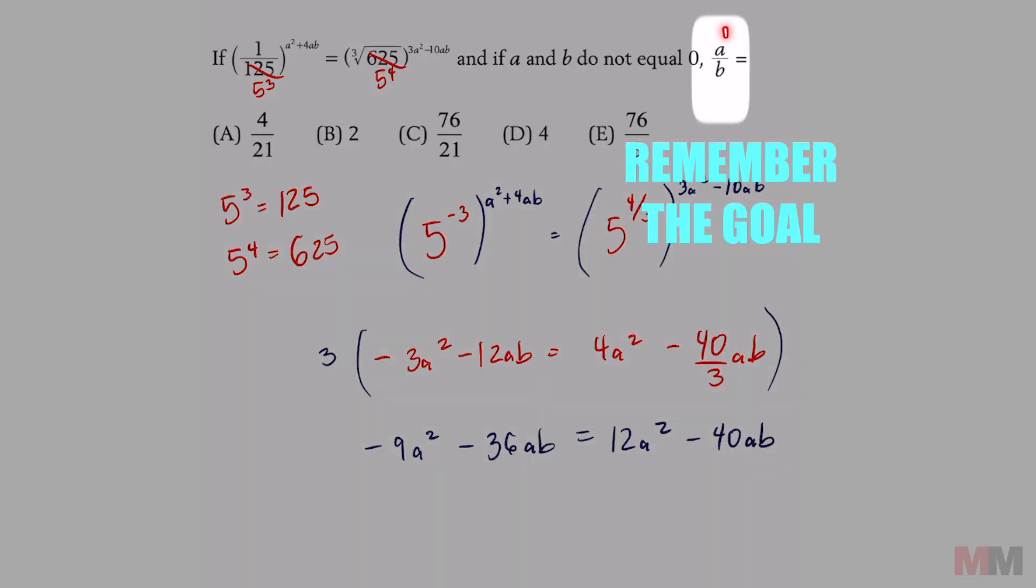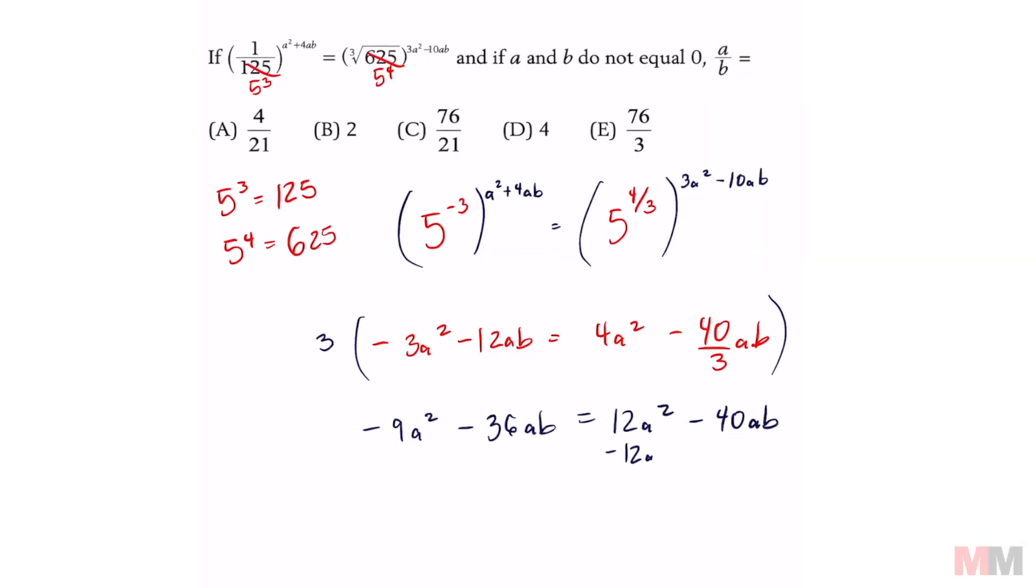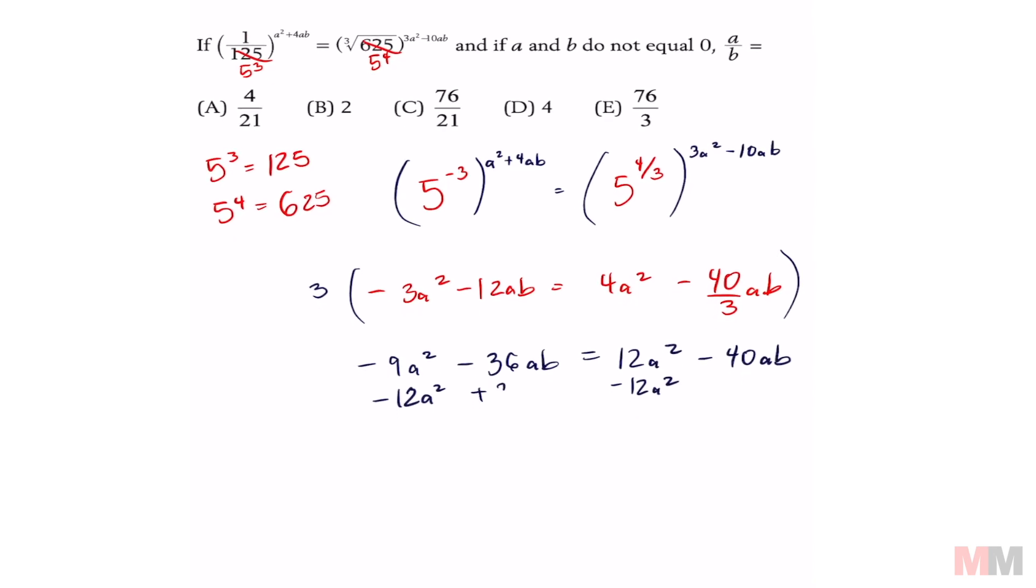From here, my goal is to get this ratio out of this equation. So we got to manipulate some variables around. I'm just going to move my a squared terms on the left and my a b terms on the right. It then simplifies to 21 a squared equals negative four a b.